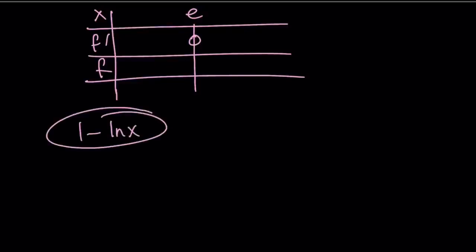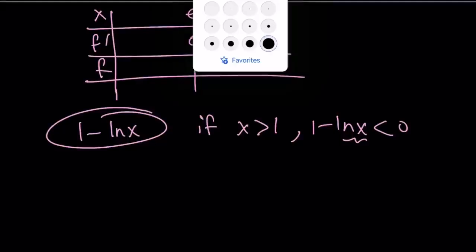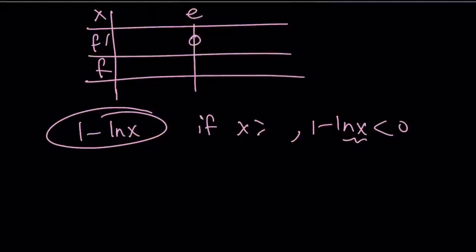So 1 minus ln x is what we need to look at. From here you can safely say that if x is greater than e, then 1 minus ln x is going to be negative because ln x is going to be greater than 1. I should probably say e, not 1. If x is greater than e, ln e is going to be greater than 1, so the difference will be negative. So we have a negative sign here and we have a positive sign here.